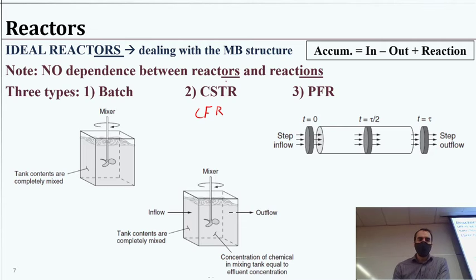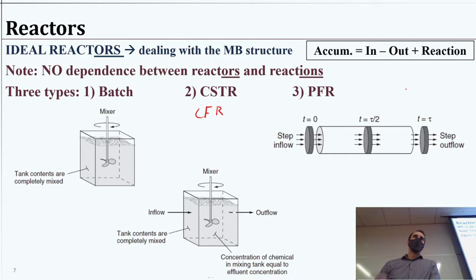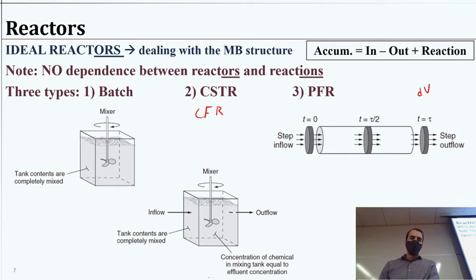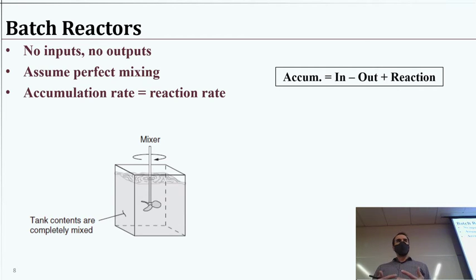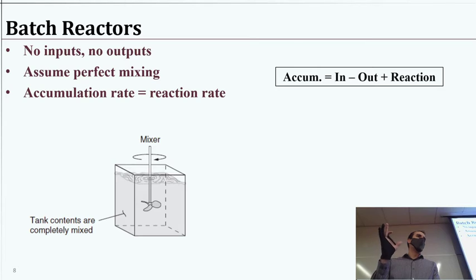The third reactor type is the plug flow reactor. We consider individual plugs of water flowing through the reactor, and we define that DV concept — just that one slice of the volume — integrating across all slices. The reason we consider these different reactor types is to understand how to build a mass balance and how the reactions function within them. The setup changes the mass balance as it relates to the reactions.